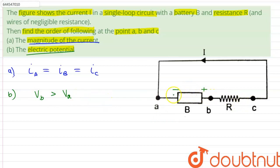And as we can see that point A and point C both are connected with the wire of negligible resistance. Therefore VA will be equal to VC.